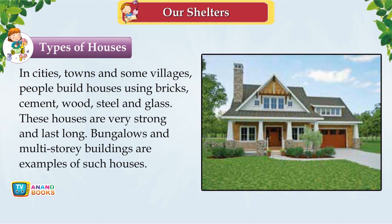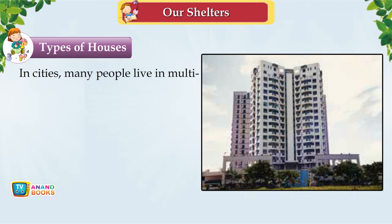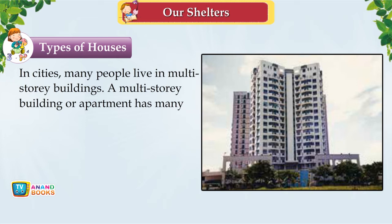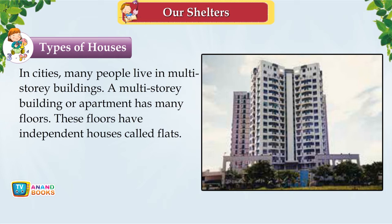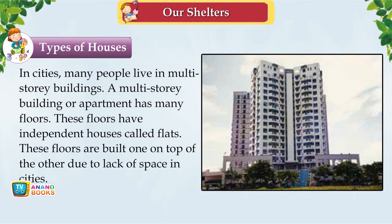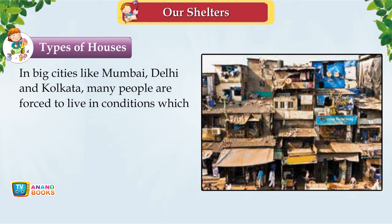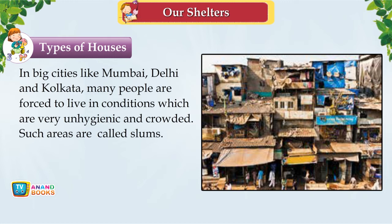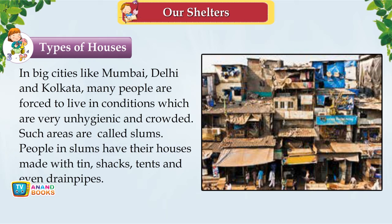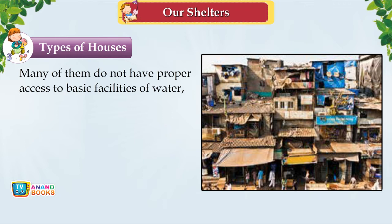In cities, many people live in multi-storey buildings or apartments with many floors, each containing independent flats, built one on top of another due to lack of space. In big cities like Mumbai, Delhi and Kolkata, many people are forced to live in unhygienic and crowded conditions called slums. People in slums have houses made of tin, shacks or tents, and often lack proper access to water, electricity and sanitation, frequently suffering from infections and diseases.